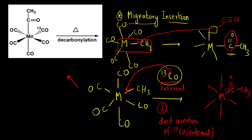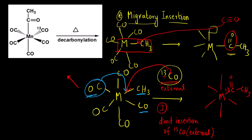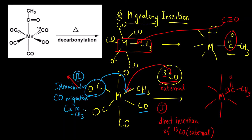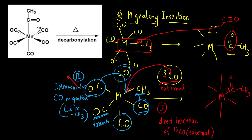Another proposed mechanism was intramolecular, meaning within the molecule. There are two carbonyls that are cis to each other, so this carbonyl migrates — intramolecular CO migration. Which carbonyl? The one that is cis to the methyl group. Only the ligands that are cis can do this — this is cis, this is also cis, and these carbonyls are cis to methyl. The one that is trans cannot. The carbonyl cis to methyl gets inserted and we get the acetyl group — metal-C bond via intramolecular CO migration.